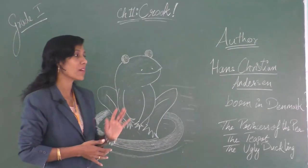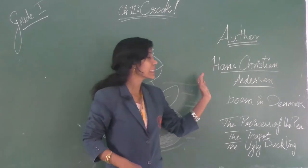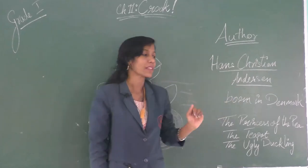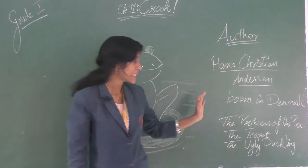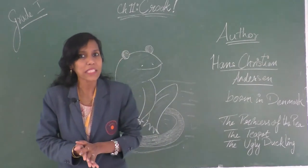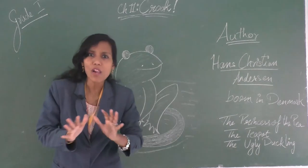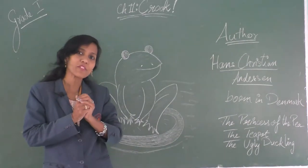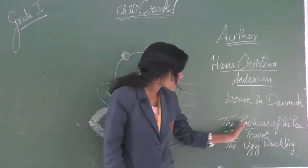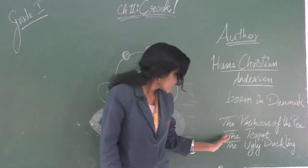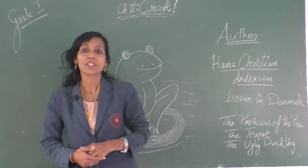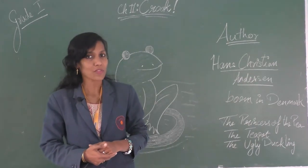Now let's talk about the author of this play. The author's name is none other than Hans Christian Andersen. He was born in Denmark. He has written many plays, poems, and stories, and he is the mastermind of all fairy tales which are loved by children. A few of his collections are The Princess and the Pea, The Teapot, and The Ugly Duckling.